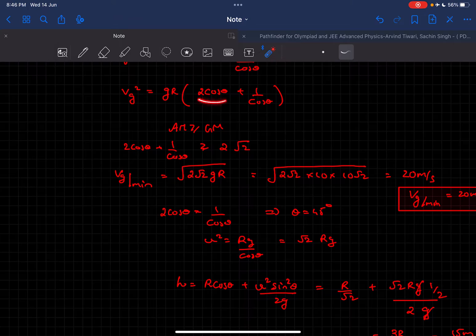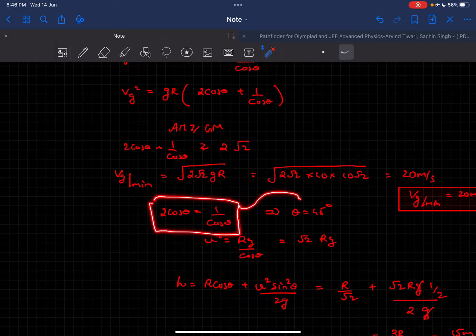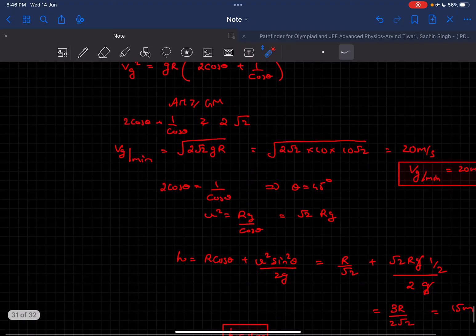happens when both terms are equal. Solving for that, we get theta = 45 degrees. With theta known, we can find u = √(2gR).